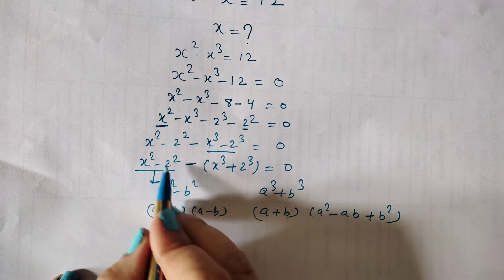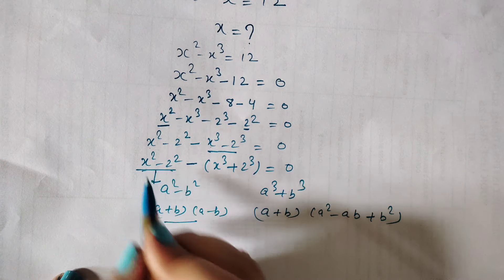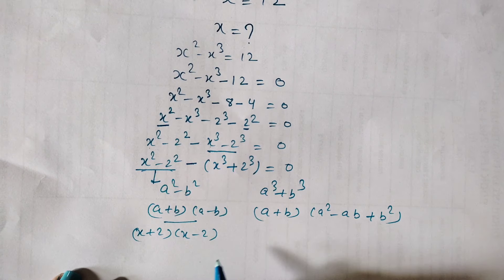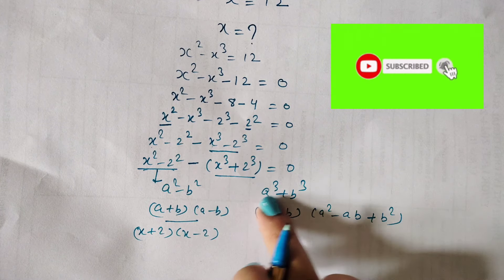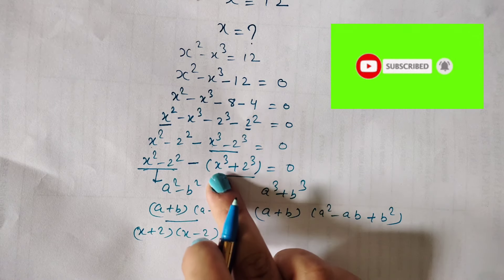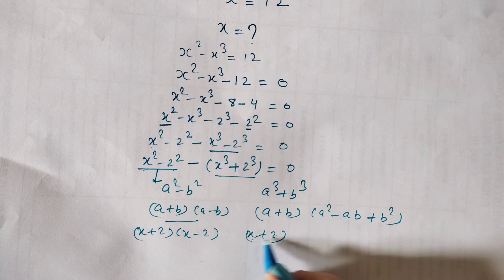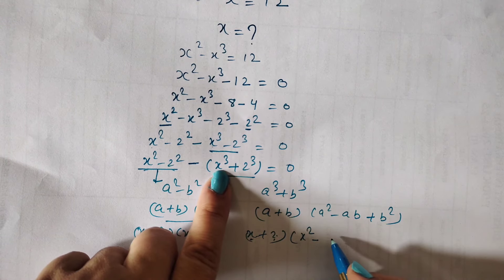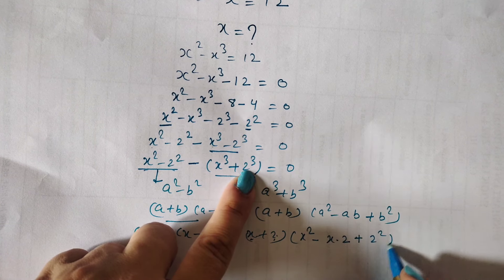The first term is x squared minus 2 squared, which is a squared minus b squared. Using this identity, we get (x + 2)(x − 2). For the cubic part, using a cubed plus b cubed, where a is x and b is 2, we get (x + 2) times (a squared minus ab plus b squared), which is x squared minus x times 2 plus 2 squared.